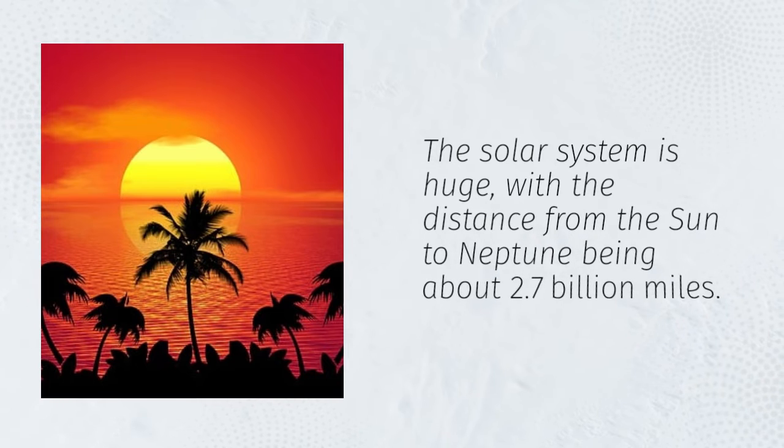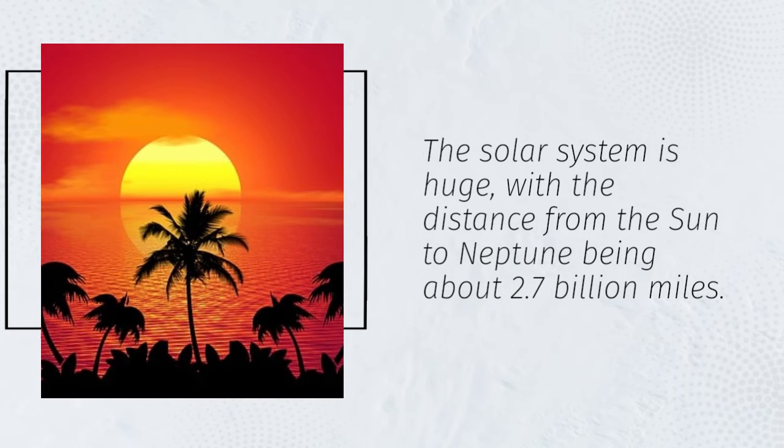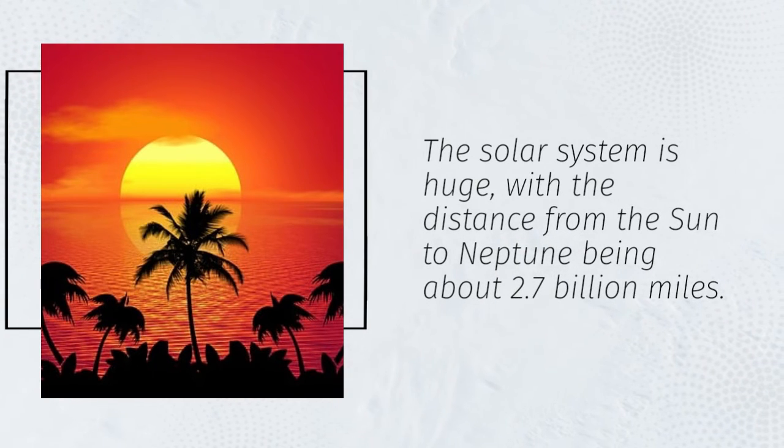The solar system is huge, with the distance from the sun to Neptune being about 2.7 billion miles.